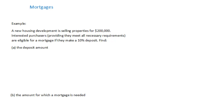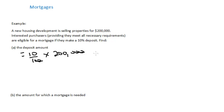Let's look at an example. A new housing development is selling properties for $200,000. Interested purchasers who meet all necessary requirements are eligible for a mortgage if they make a 10% deposit. To find the deposit amount, we calculate 10% of the asking price, which is 10% of $200,000. The zeros cancel and that equals $20,000.